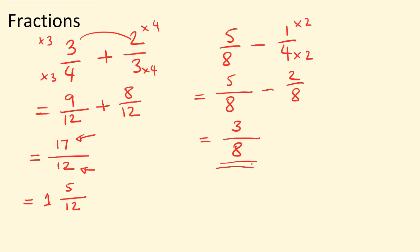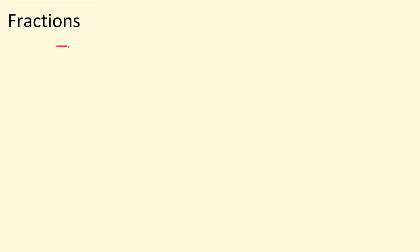Now let's have a look at our next examples on multiplying and dividing fractions — but first I just realized we need to do a few examples with mixed numbers. Say for example, we have seven and a quarter, and we are adding two and two thirds. When you are adding mixed numbers, the best way is to add the whole numbers first. So let's add seven and two: seven and two is nine. Just leave that aside.